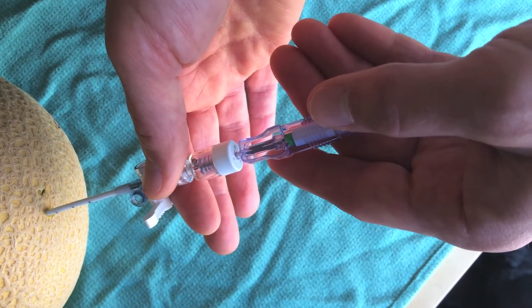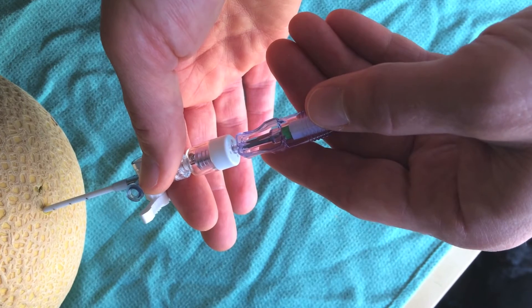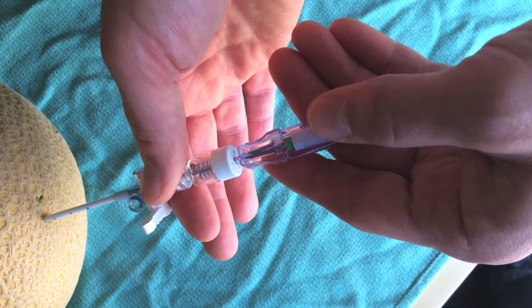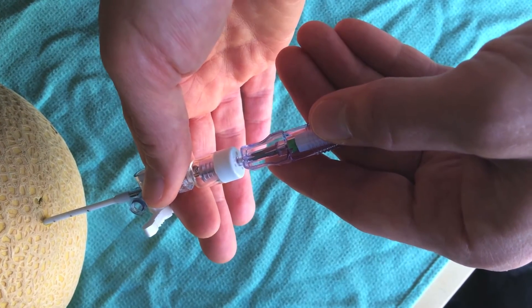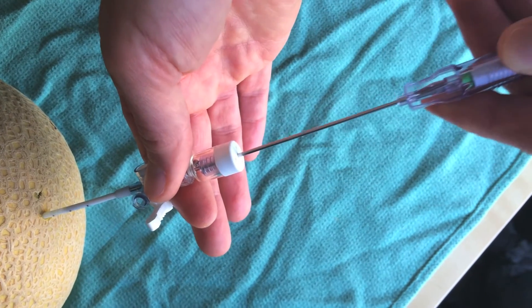The next step is to remove the needle leaving the catheter in place. Hold the catheter just above the stopcock and remove the needle. You can then discard it.